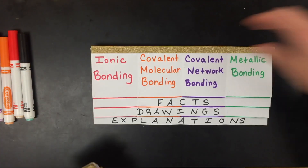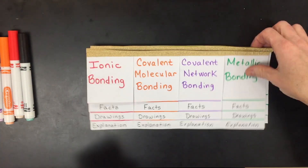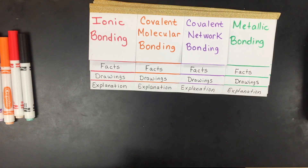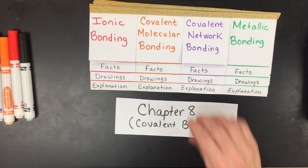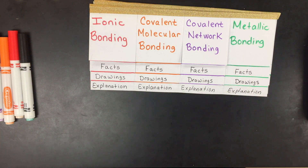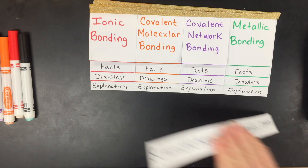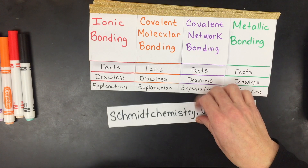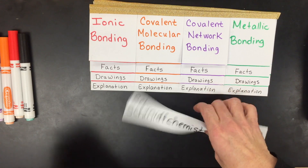To make this foldable, choose which of the three versions you like best. To find the notes, go to chapter eight on covalent bonding at schmidtchemistry.weebly.com. Here's how you make the foldable.